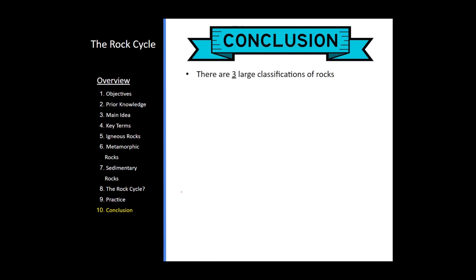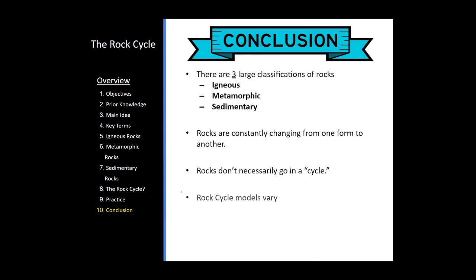So in conclusion, there are three large classifications of rocks: igneous, metamorphic, and sedimentary. They are constantly changing from one form to the other. And they don't necessarily go in a cycle. There are many different types of rock cycles, and they are all extremely helpful to help you determine which rock type is being transformed into another rock type. I hope this presentation was helpful, and I'll see you guys next time.